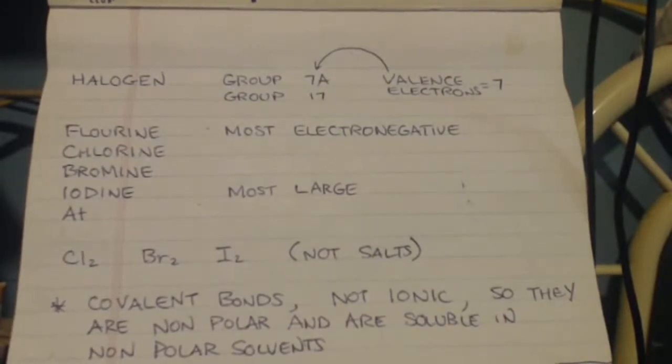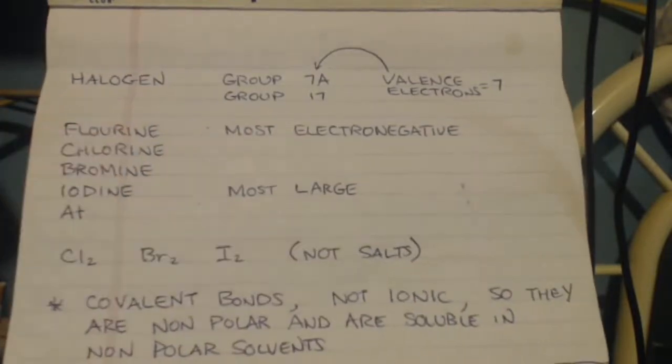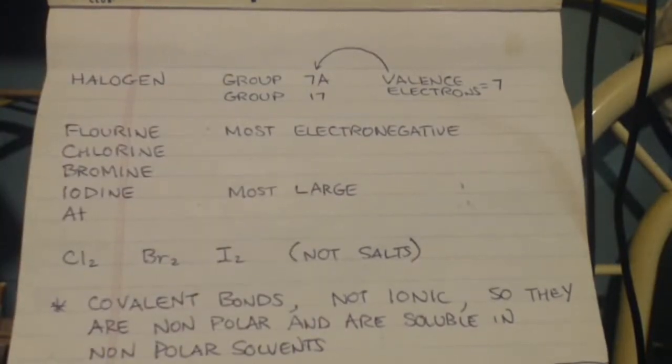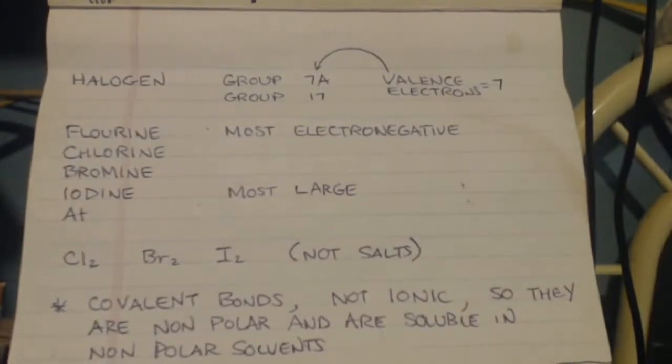Iodine is so big and so large. Yes, it wants to fill up that octet. It wants an extra electron. But the iodine is giant. The electrons are so far away that it's like two magnets far away from each other. And here you've got two magnets close to each other. Which one's going to fill it more? The one that's close, obviously. That's why these are more electronegative. The larger it is, the less electronegative.